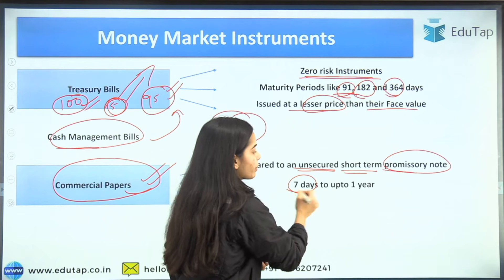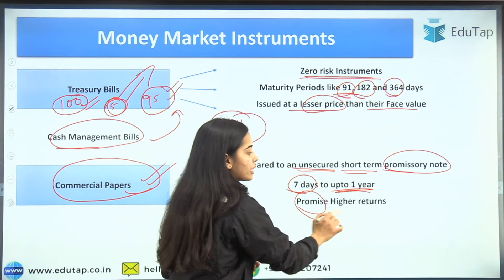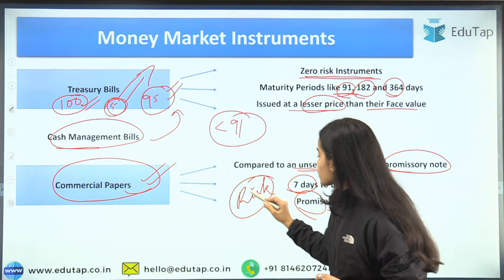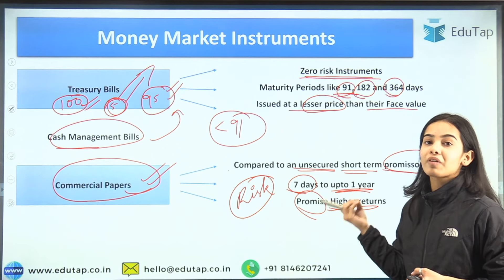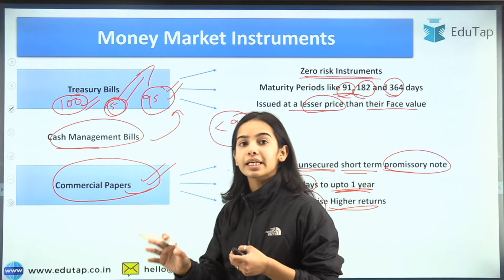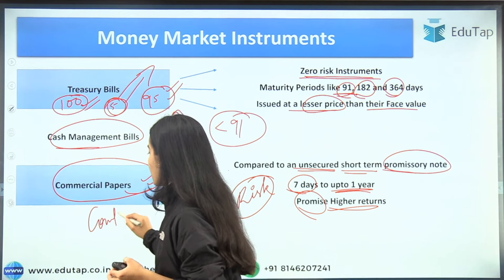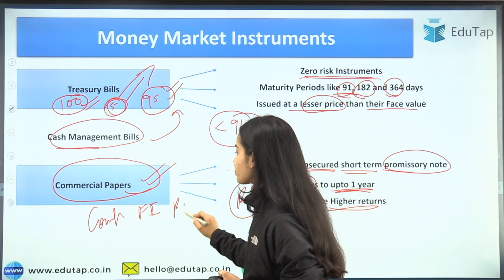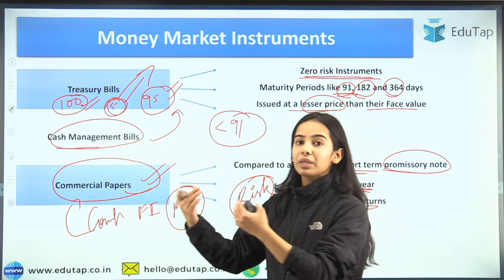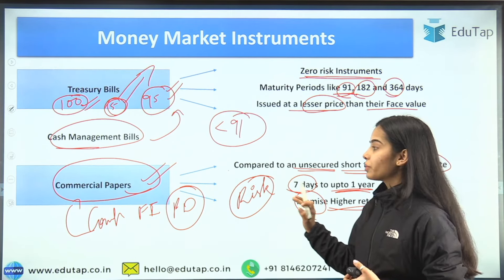The maturity of commercial paper is from a minimum of seven days up to one year. It is unsecured and has risk involved — it is not a zero-risk instrument. Because of this risk, it promises higher returns. We will take a risky asset only when the returns are also high. So commercial papers are issued by companies, financial institutions, or primary dealers who want to raise money, promising to return the loan in seven days to up to one year, as written in the promissory note.